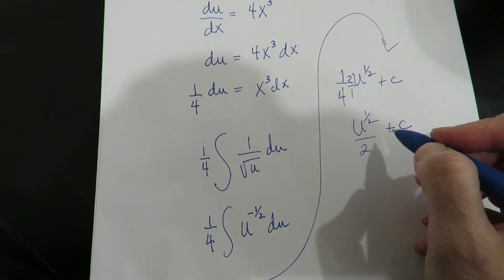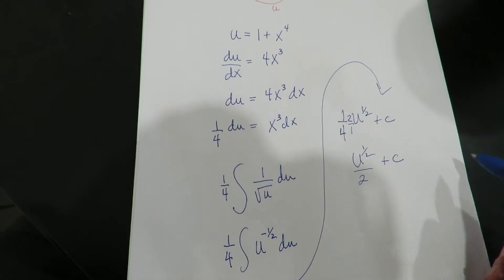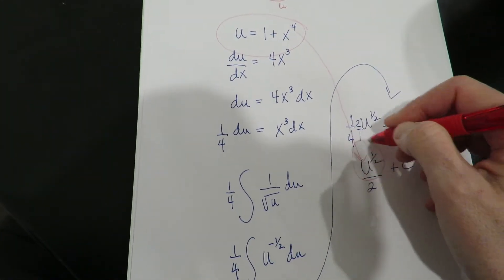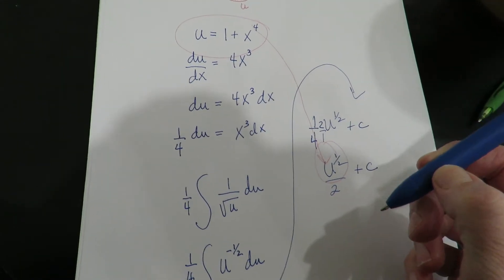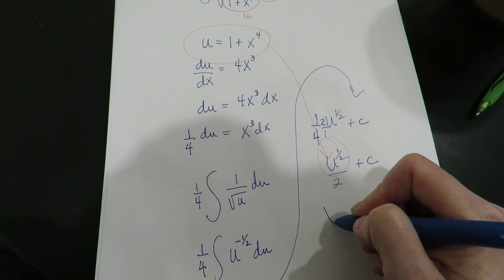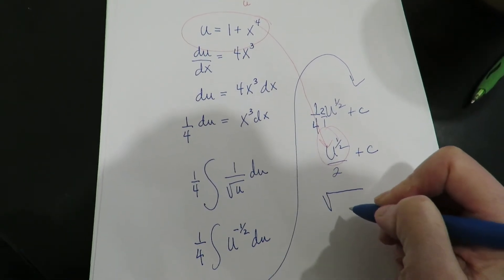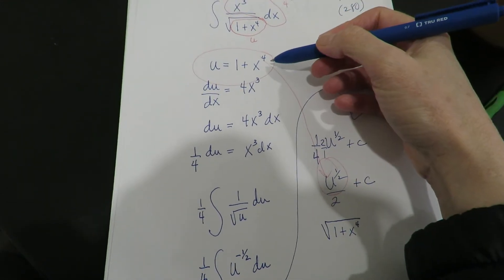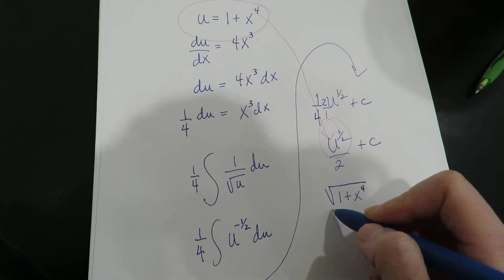And then don't forget, at the very end you have to actually replace the definition of u into the problem, because if you start with x, you have to end with x. So it's 1 plus x to the 4th over 2.